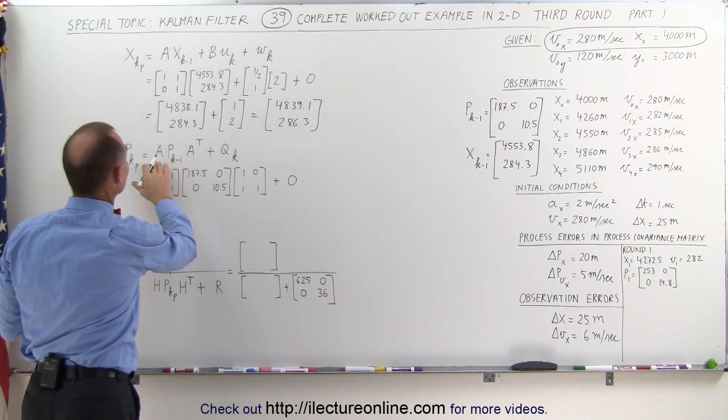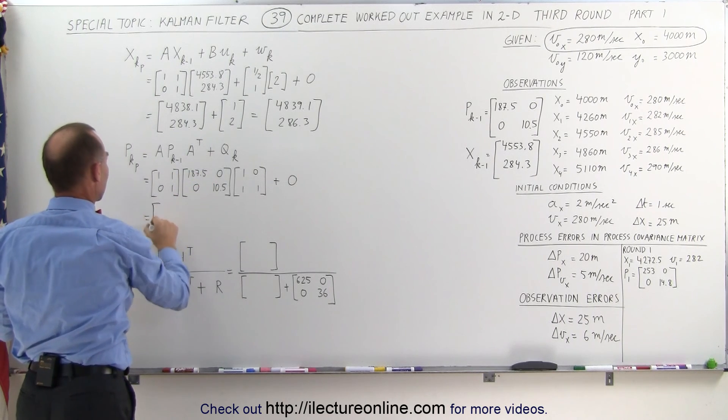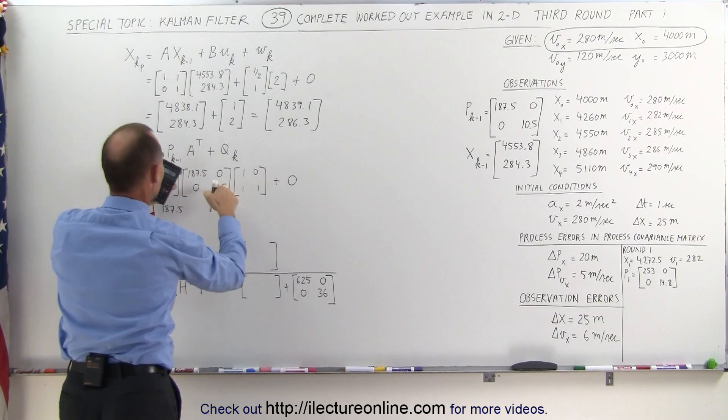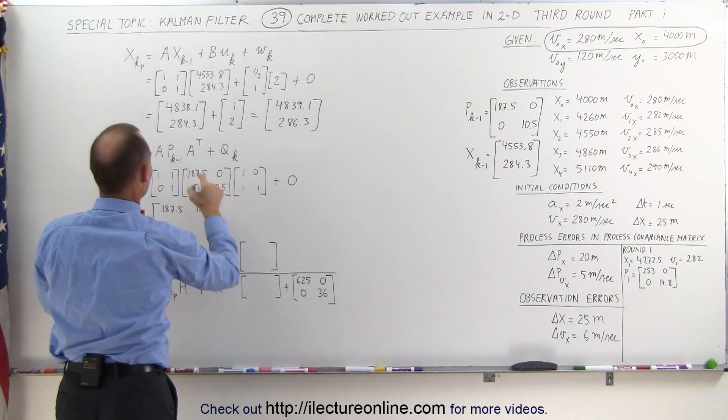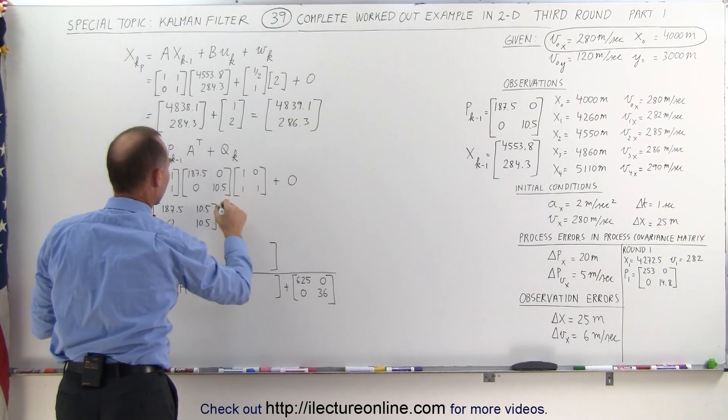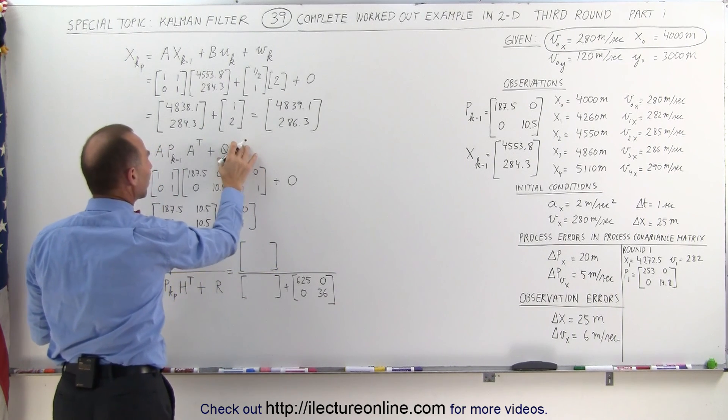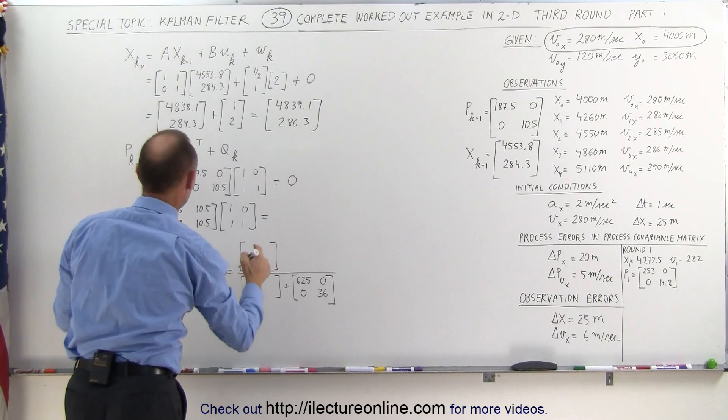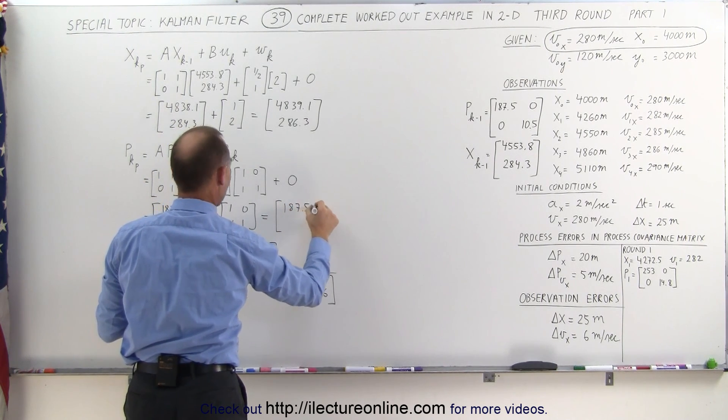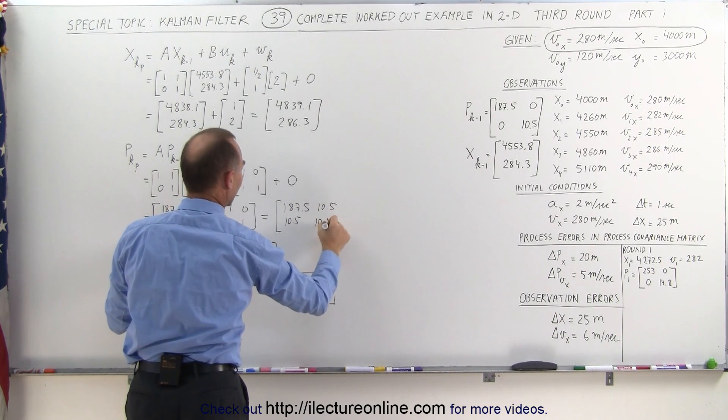Now calculating the predicted process covariance matrix, we have to multiply this times this, so we get 1 times that, that would be 187.5, 10.5 over here, 0 here, and 10.5 over here, multiplying that times 1011. And again, we're going to call the error in the process 0. We multiply that, we get the following matrix: 187.5, 10.5. This now will become also 10.5 and 10.5.